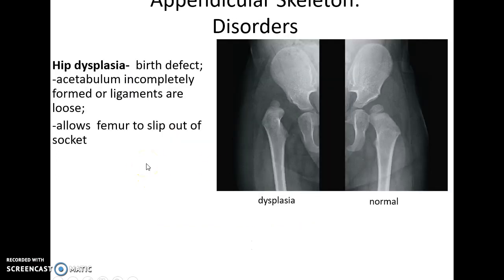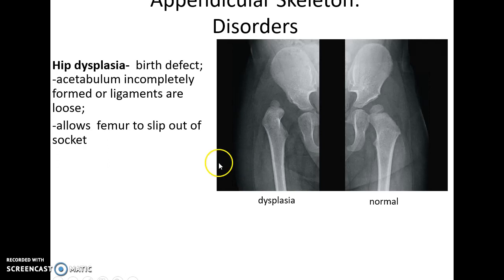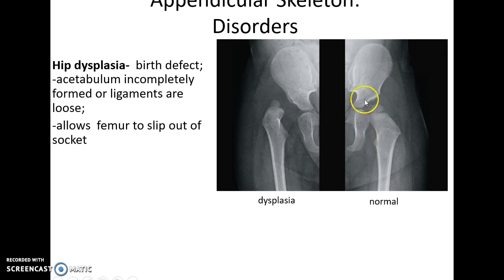A disorder that can occur in an infant is hip dysplasia, where the head of the femur does not fit into the acetabulum properly. This either slips out or the ligaments are too loose. This can be corrected if necessary. Here is normal versus displaced — you can also see how the ilium and the ischium are not fused together.